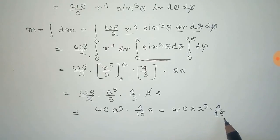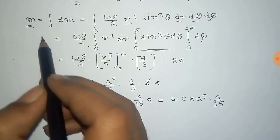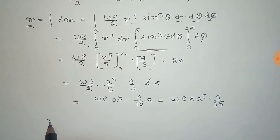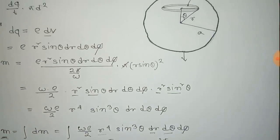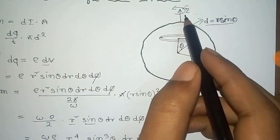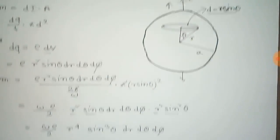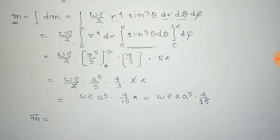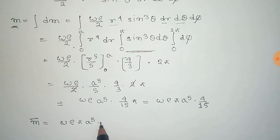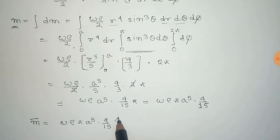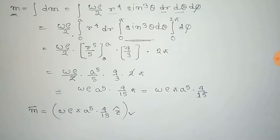We get the magnitude of the magnetic moment. Now we find the direction: since the sphere is rotating along the z-axis, the magnetic moment must also be along the z-axis. So the magnetic moment vector M is equal to omega rho pi a to the power 5 times 4 by 15, in the z-cap direction. Thus we get the magnetic moment vector for the solid sphere.